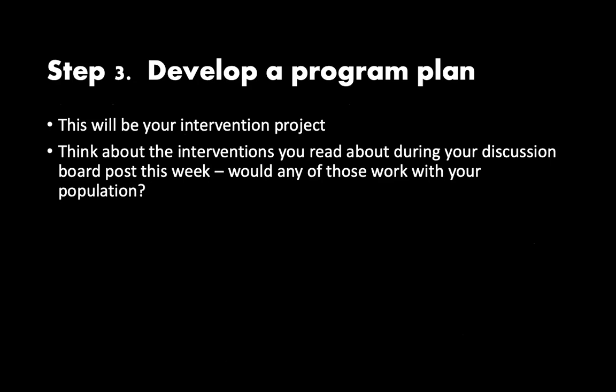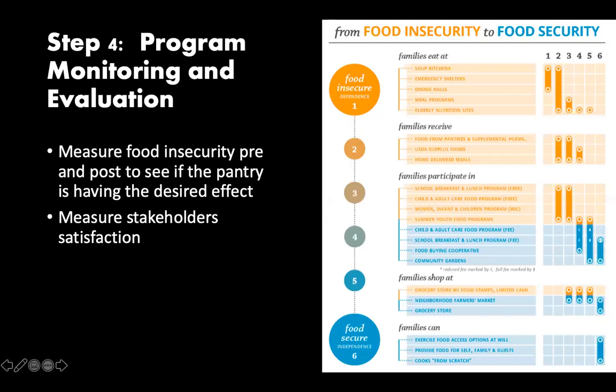Then you develop a program plan, which will be your final intervention project. Think about what it would look like to redesign the pantry or an entire system to deal with food insecurity on a college campus. The last step is monitoring and evaluation — trying to lead from a food insecure population to a food secure population. You'd measure that pre and post, measure stakeholder satisfaction, and have deliverables showing the program is making a difference, because that's what leads to a program continuing. If it's not making a difference, you figure out what modifications to make, and the cycle continues.